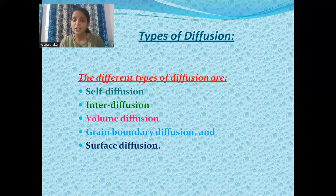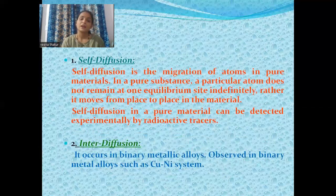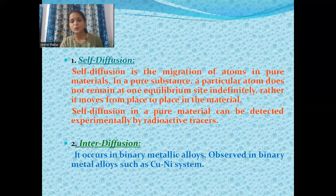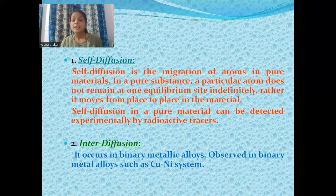Now let's see the types of diffusion. There are different types: self diffusion, interdiffusion, volume diffusion, grain boundary diffusion, and surface diffusion. Self diffusion is the migration of atoms in pure materials. In a pure substance, a particular atom does not remain at one equilibrium site indefinitely; rather it moves from place to place in the material. Self diffusion in a pure material can be detected experimentally by radioactive tracers.